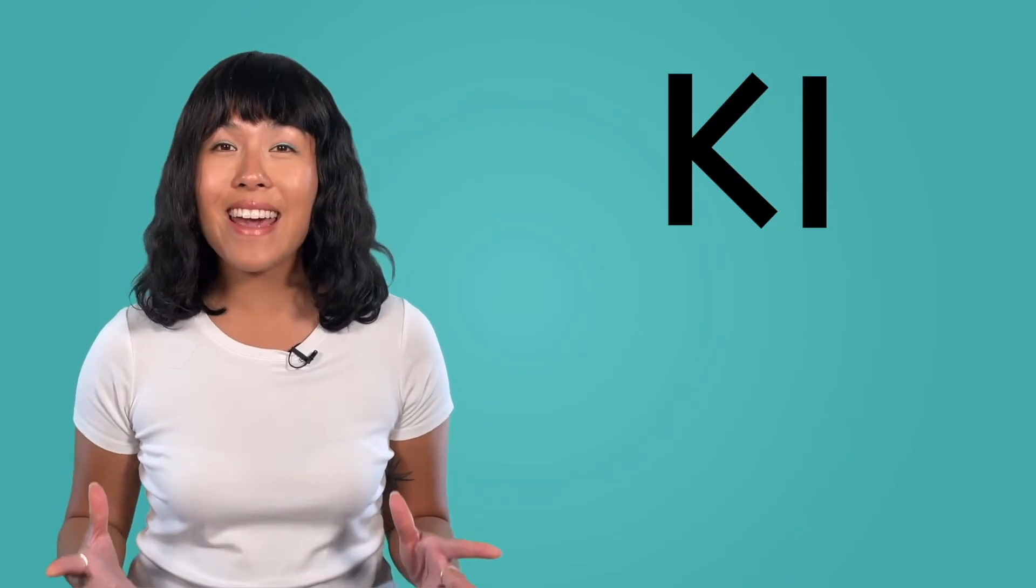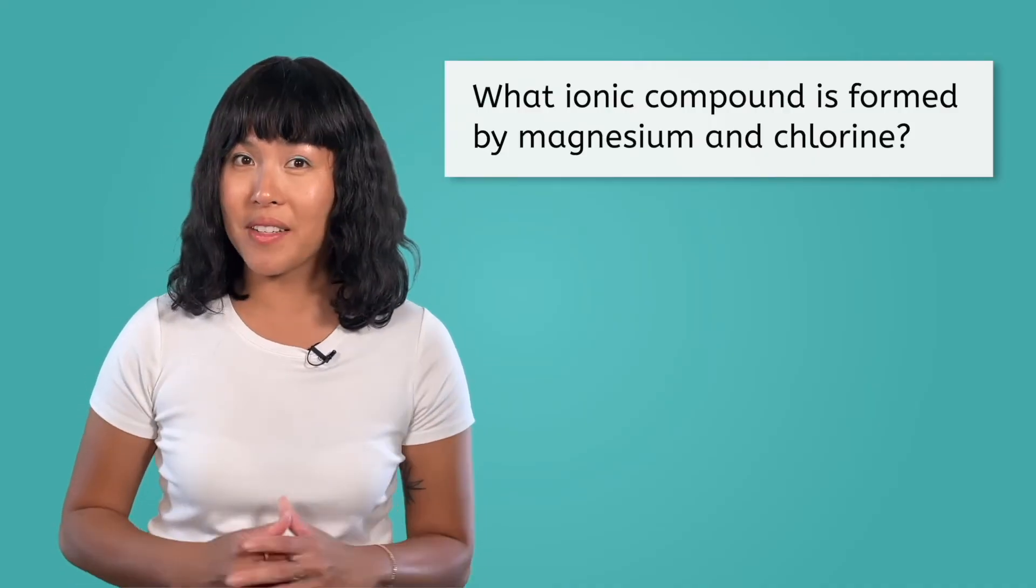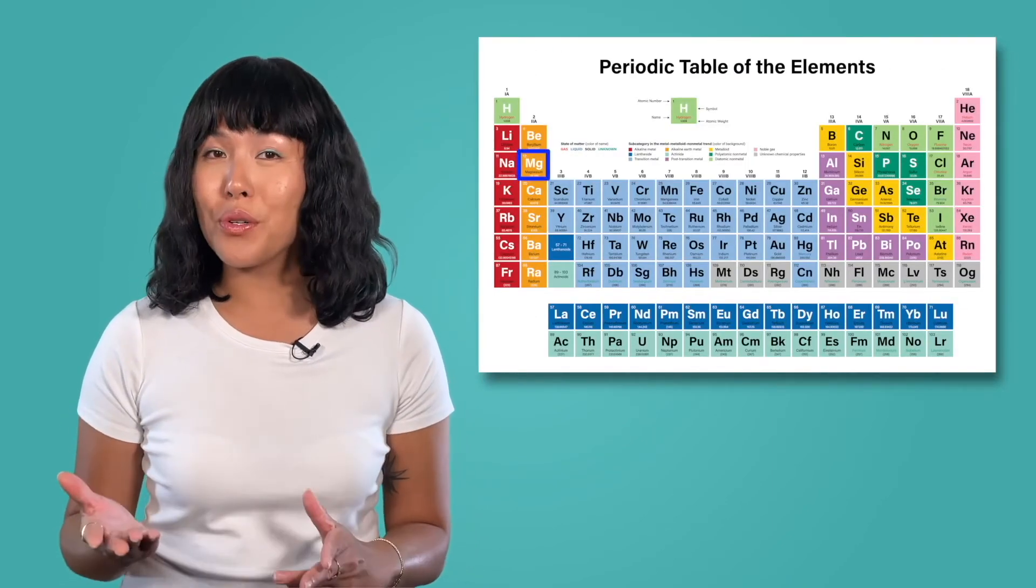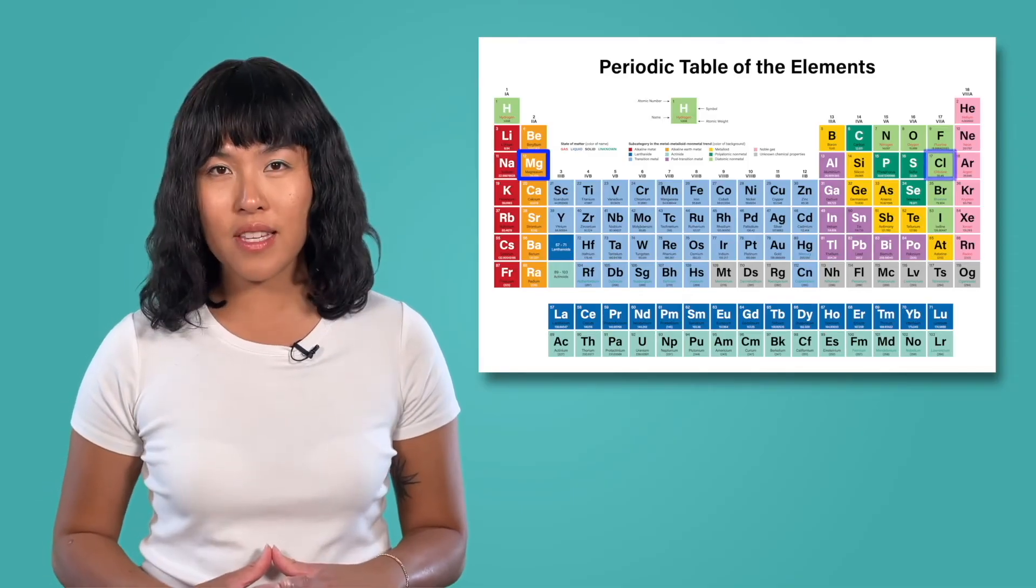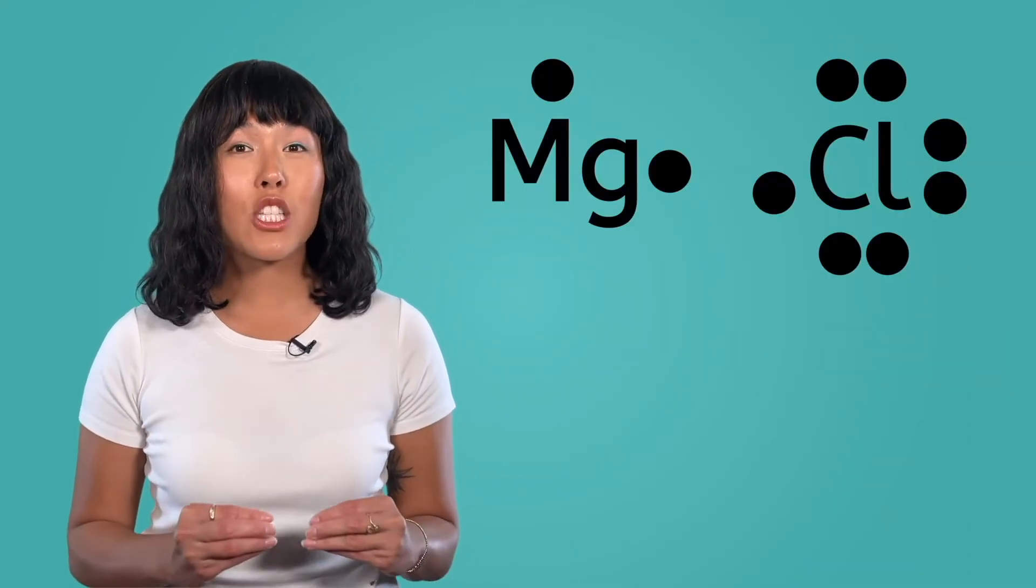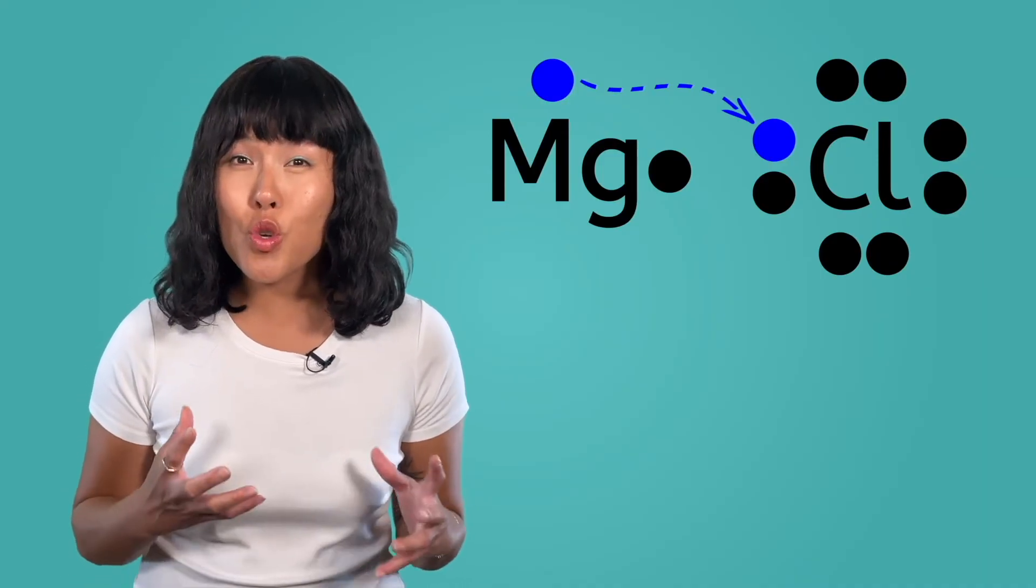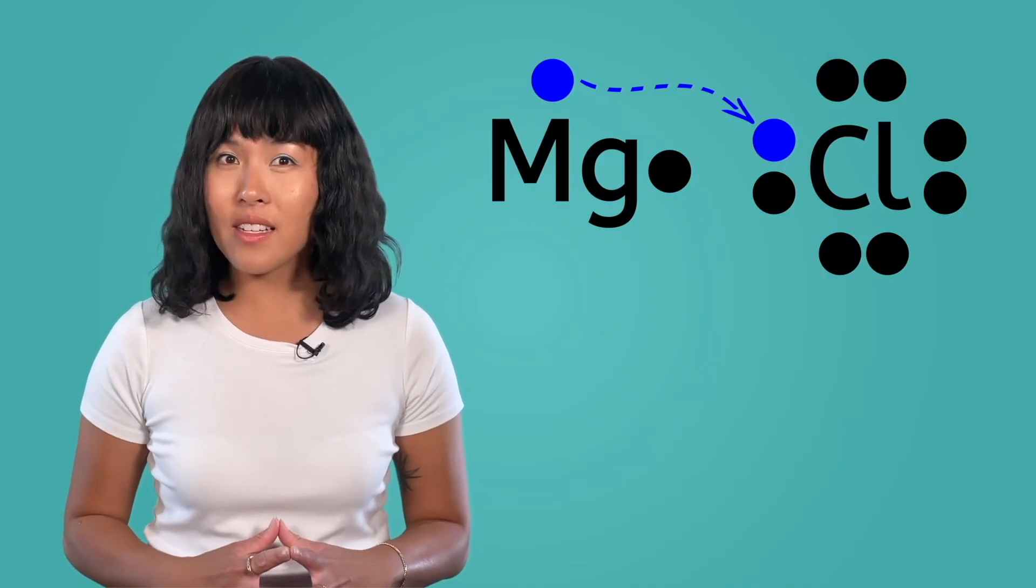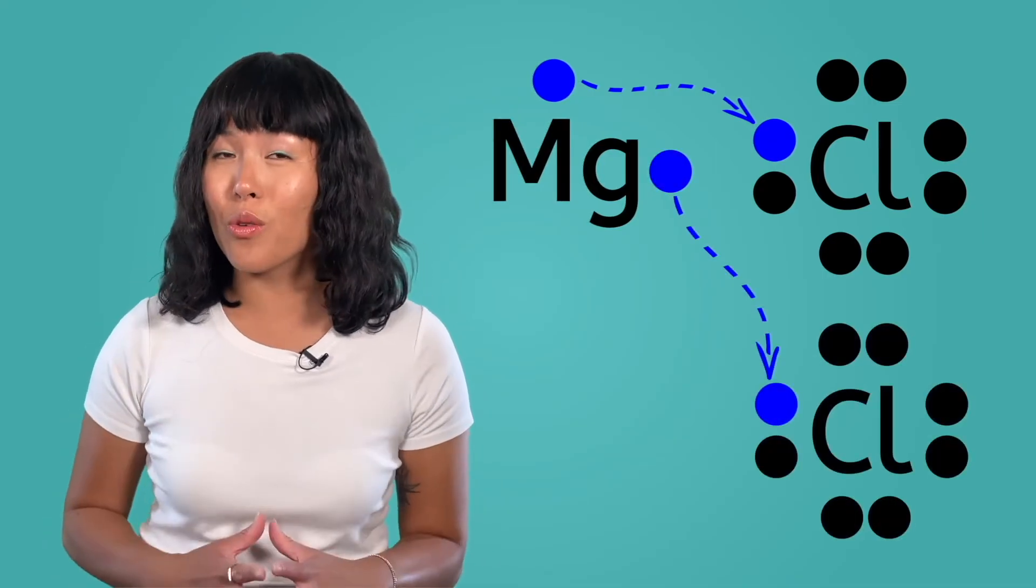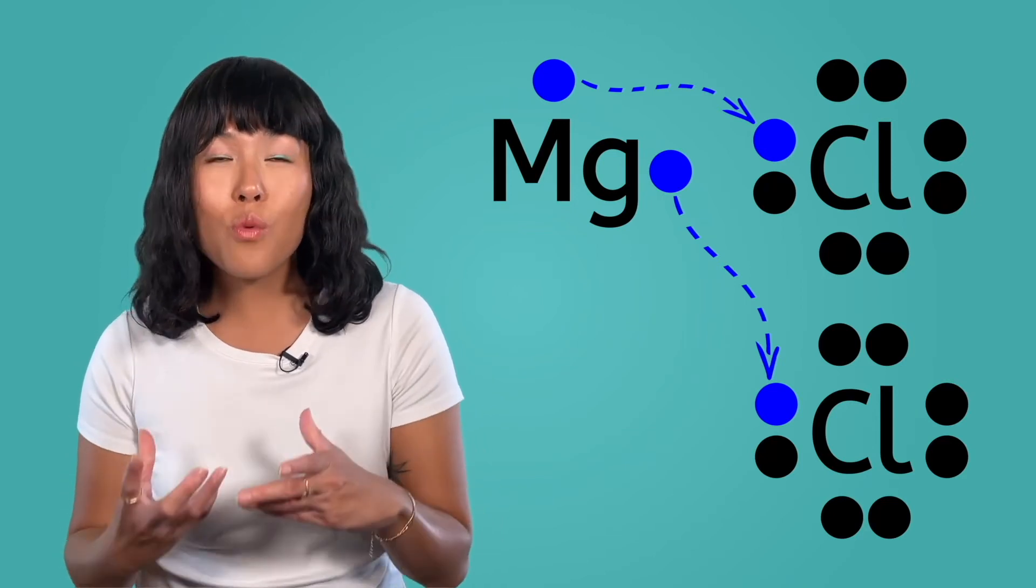What about the compound that forms between magnesium and chlorine? Let's start with the Lewis dot structures. Magnesium is in group 2, so it has 2 valence electrons, and chlorine is in group 7 and has 7 valence electrons. This chlorine atom has space to accept one of magnesium's valence electrons, but magnesium has 2 valence electrons to lose. Any ideas of what we can do to help magnesium out? What if we add a second chlorine atom?